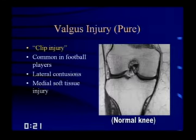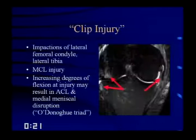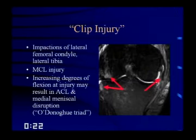Here's a clipping injury with impactions of the lateral femoral condyle and lateral tibia. The MCL stops abruptly — a full-thickness MCL tear. With increasing degrees of flexion at injury, this can result in ACL and medial meniscal disruption: the so-called O'Donoghue's triad, which is actually surprisingly rare. Grading MCL injuries: Grade 1 is a sprain — edema superficial to the MCL. Grade 2 is a partial tear with intrasubstance increased signal within the ligament. Grade 3 is complete disruption of the MCL.